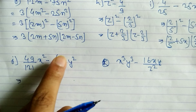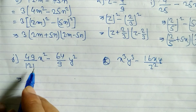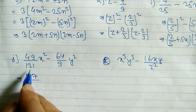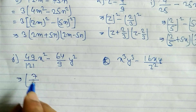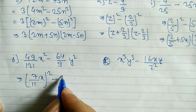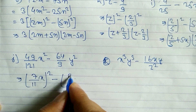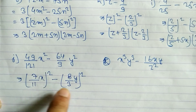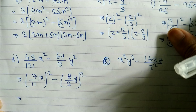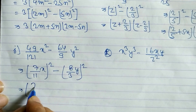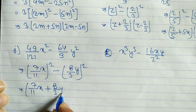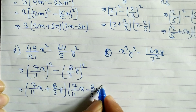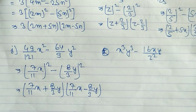For problem j: 49/121 · x² - 64/9 · y². The square root of 49 is 7 and of 121 is 11, so we get (7/11 · x)². The square root of 64 is 8 and of 9 is 3, so we get (8/3 · y)². With a = 7x/11 and b = 8y/3, the answer is (7x/11 + 8y/3)(7x/11 - 8y/3).